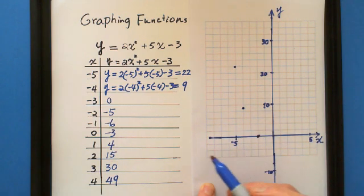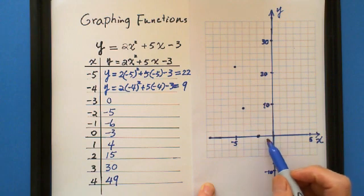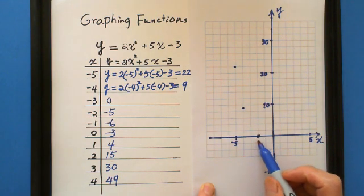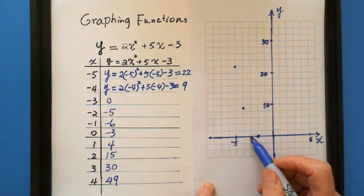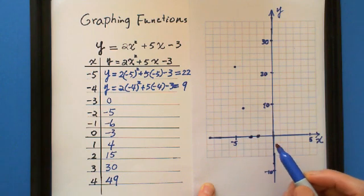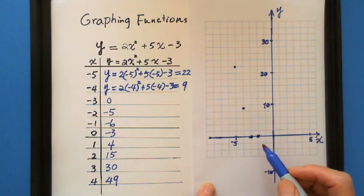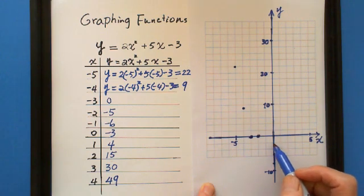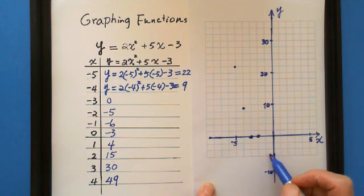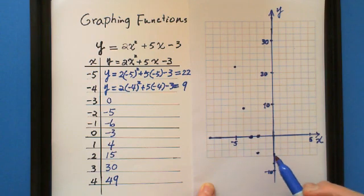Negative 3 is 0. Negative 2 is negative 5. Negative 2. This is negative 3 is 0. Should be here. Negative 2 is negative 5. This is negative 2, negative 4, negative 6. Negative 5 here. This one.